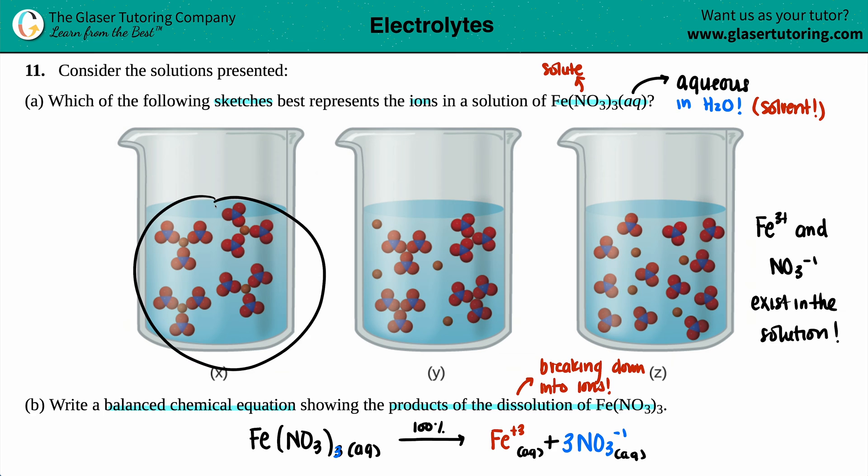So first off, we want to find a solution in which we don't see this as one unit. We want to see the breakdown of Fe's and NO₃s. So for example, for this one, this is the Fe in the middle surrounded by the three NO₃s. I know this because I'm looking at the colors. There's three oxygens, and you got N in the middle, and the Fe is this guy in the middle.